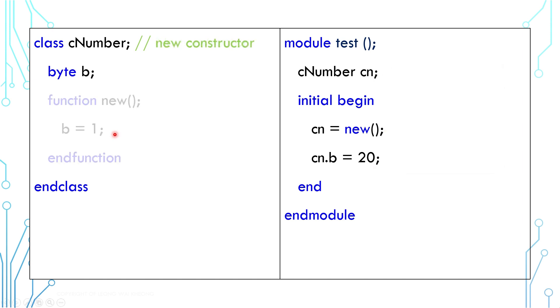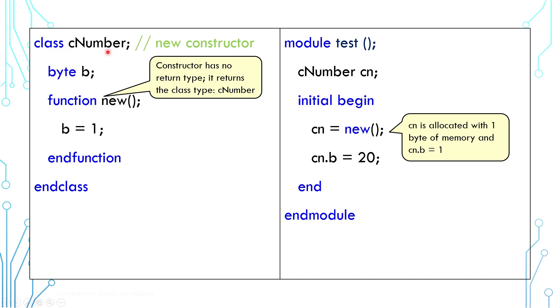We can also add customized new function to initialize a class handle. In calling new here, we'll execute the code here which sets the byte to 1. Note that this optional new function does not have a return type. It is supposed to return the class it represents.